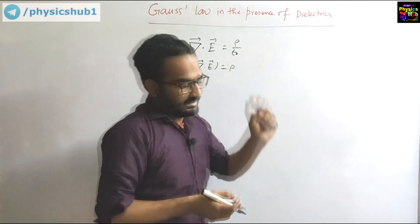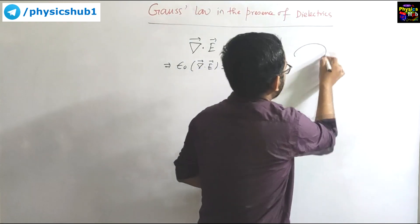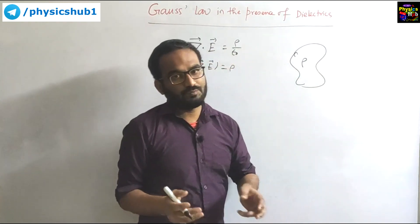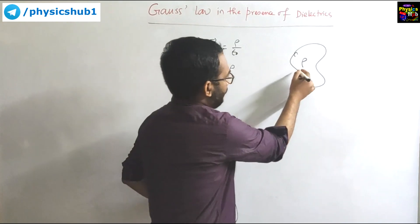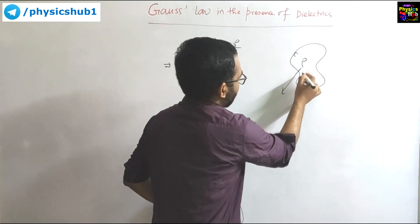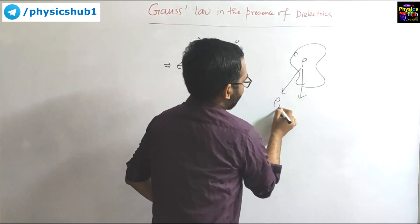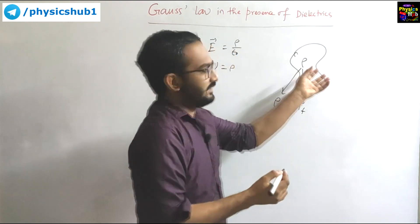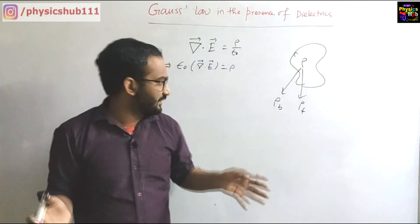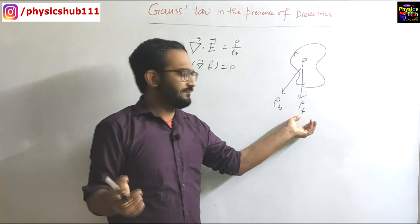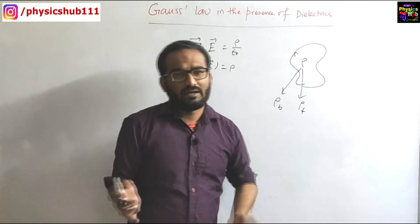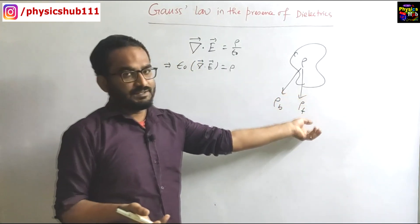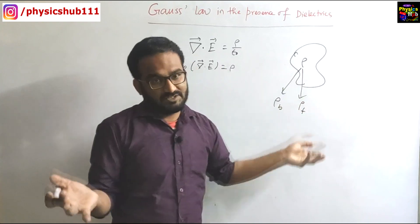Now what happens in dielectrics? In dielectrics this rho — the volume charge density — is composed of two components. So rho has two parts: one is rho bound and another one is rho free. Two types of charge are seen in dielectrics: the bound charge giving bound charge density, and the free charge giving free charge density.